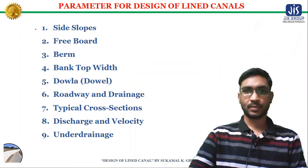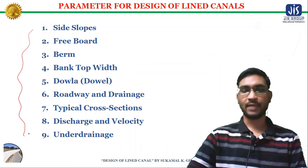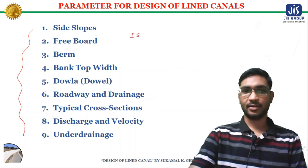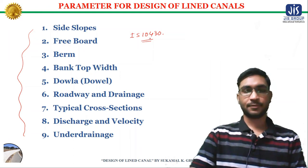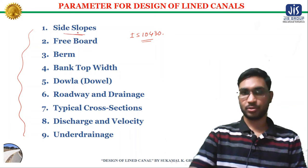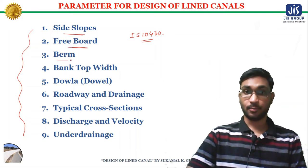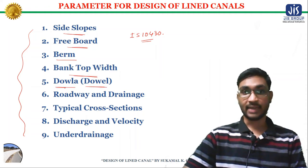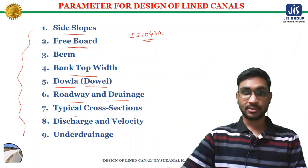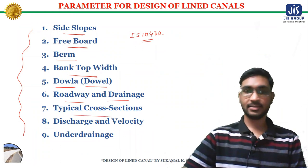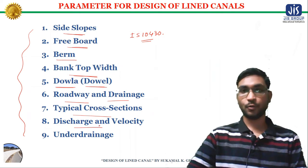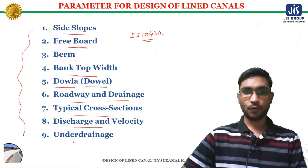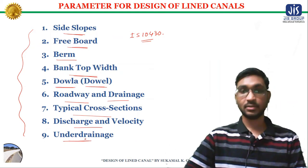These are the various design parameters of lined canals according to Indian Standard 10430. The first design parameter is side slopes, then the freeboard, the berm, the bank top width, the dowel (also known as dowla in local language), the roadway and drainage near the canals, the typical cross sections of lined canals, the discharge, the velocity of water flowing through the lined canals, and the under drainage.